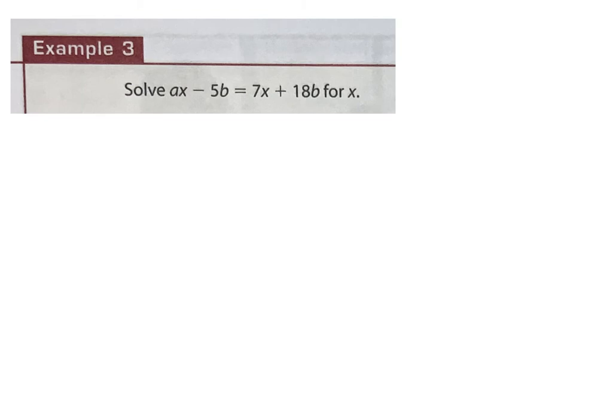Example three on page 95. This one has AX minus 5B equals 7X plus 18B, and they want us to solve for X. Here is the thing when you have multiple variables of the same variable — I have X's here and I have B's. What I need to do is get all of my X's on one side and all of my B's on the other side.